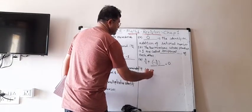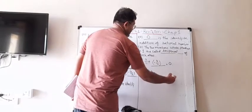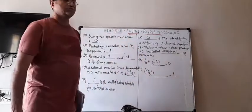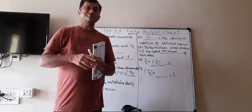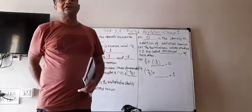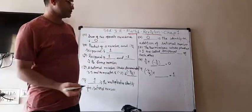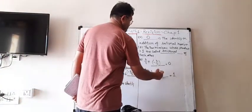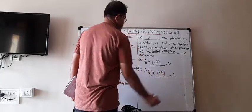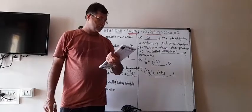Number 19. Minus 4 upon 5 multiplied by blank is equal to 1. The product of 2 reciprocals is 1. So what is the reciprocal of minus 4 upon 5? It is minus 5 upon 4. So the answer is minus 5 upon 4.